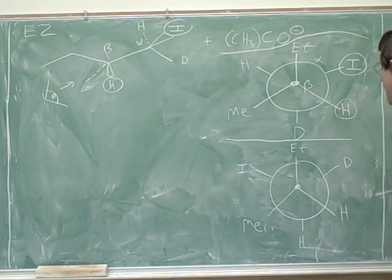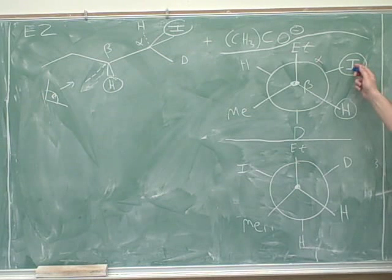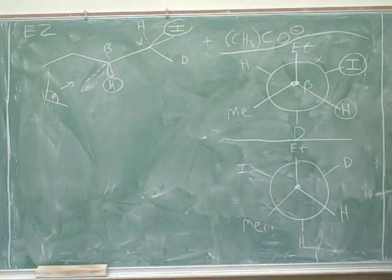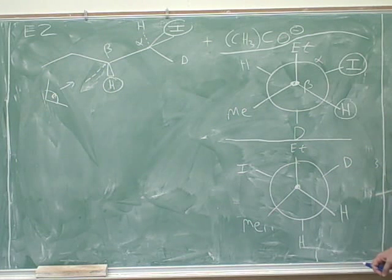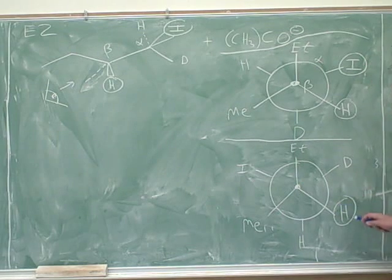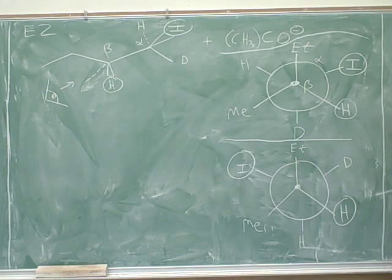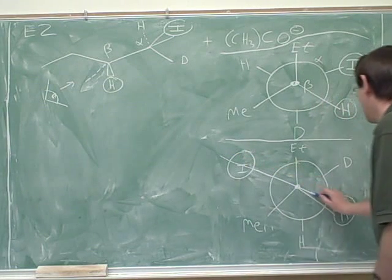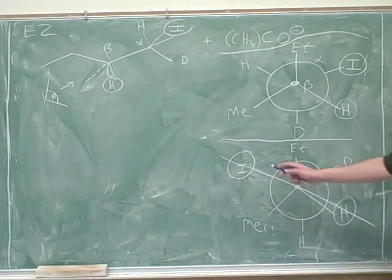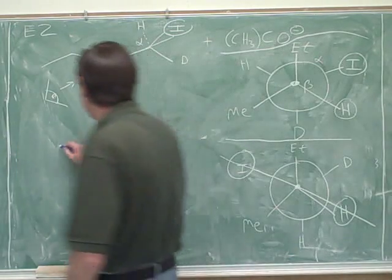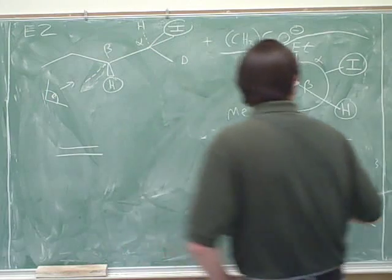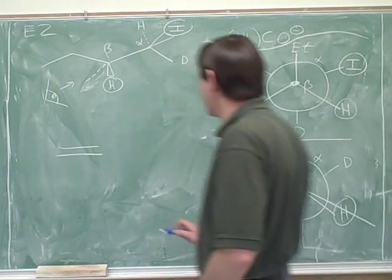Here's the beta-hydrogen and here's the leaving group. Now these are gauche — they're not anti. So we need to rotate until they are anti. It looks like one of you rotated both of these, so one was pointing up and one was pointing down — that's perfectly fine. It may be a little less work to just leave the hydrogen where it is and rotate the iodide so it's anti. Either is fine, whatever you're comfortable with. So then you could draw the line that separates this in half between our two circles. Let's keep labeling the alpha and the beta-carbons.